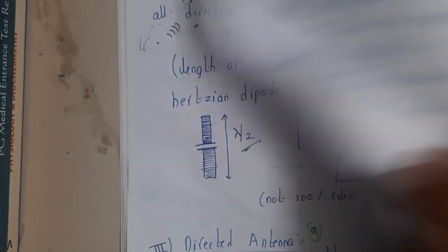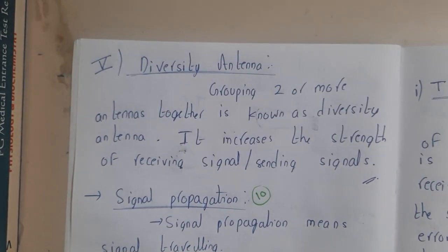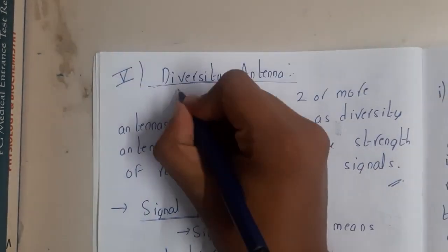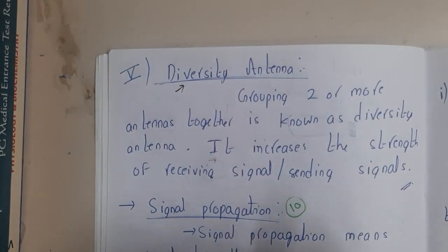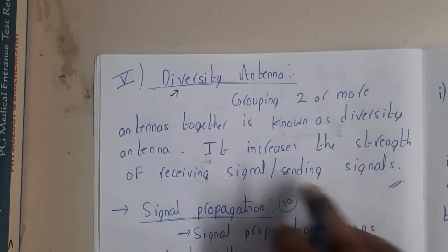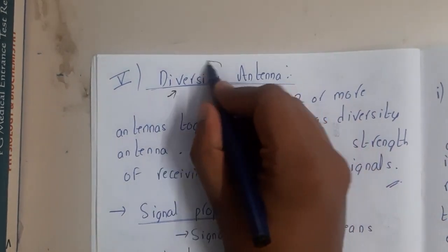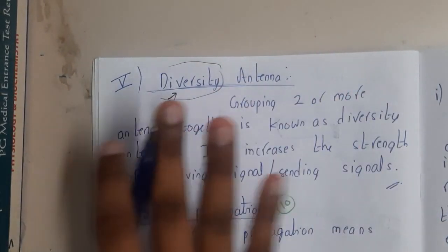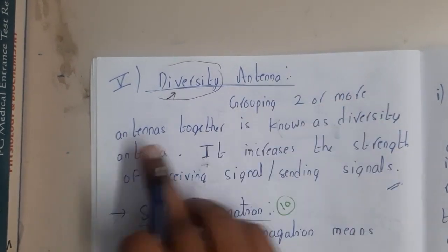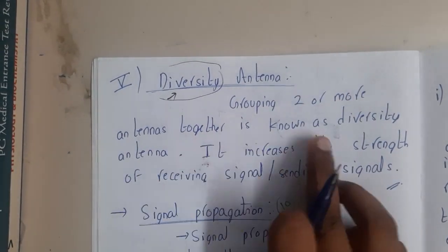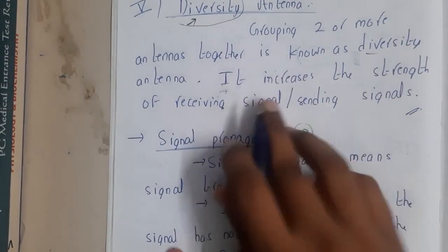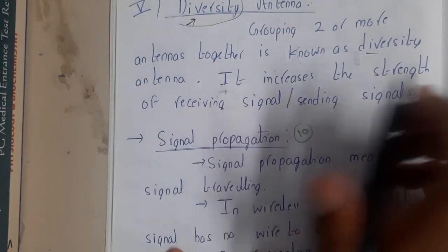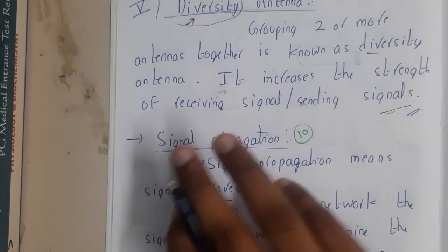The last type is the diversity antenna. It is a bit different — in simple words, it is a combination of the previous antennas. Grouping two or more antennas together is known as a diversity antenna. It increases the strength of receiving and sending the signal.